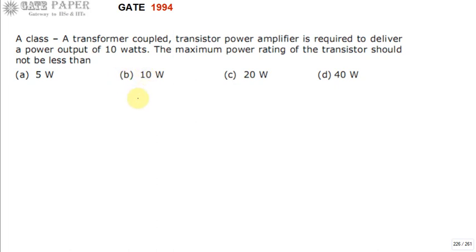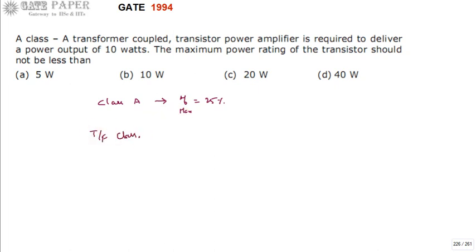In Class A, the transistor is biased in the active region such that the Q point is in the middle of the active region. Class A has a maximum efficiency of 25% for all types except the transformer coupled power amplifier. The transformer coupled Class A power amplifier has a maximum efficiency of 50% — it is always less, but the maximum you may get is 50%.